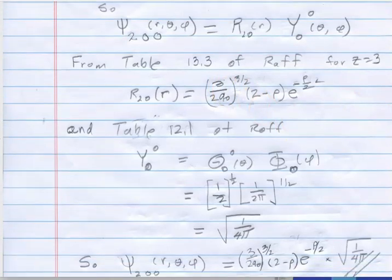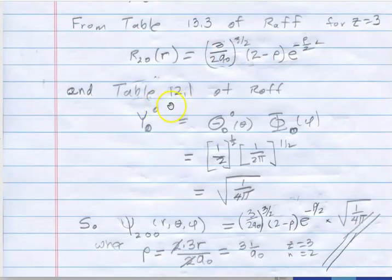And then likewise the spherical harmonics had to go back to chapter 12 and build it up from the theta and the phi function for 0, 0, 0, and that turned into 1 over the square root of 4 pi.